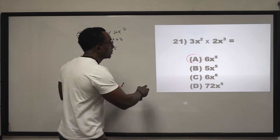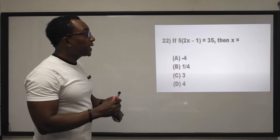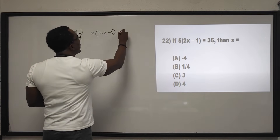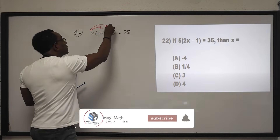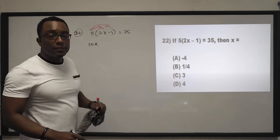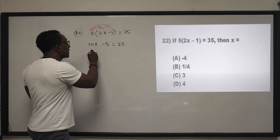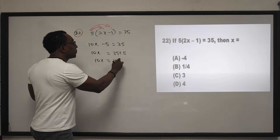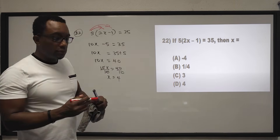Question 22: if 5(2x minus 1) equals 35, what is x? Expanding the brackets: 10x minus 5 equals 35. Adding 5 to both sides: 10x equals 40. Dividing by 10: x equals 4. The answer is D.